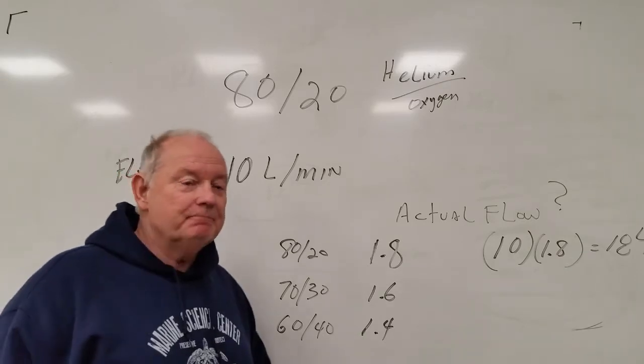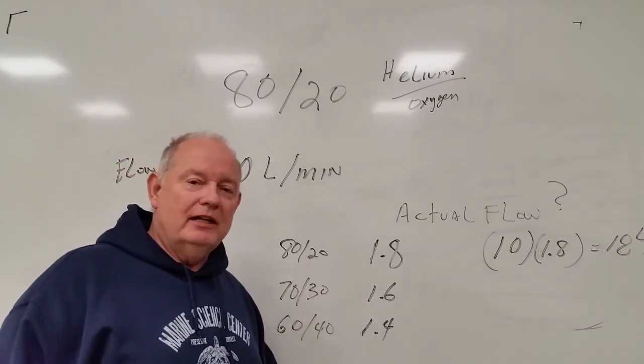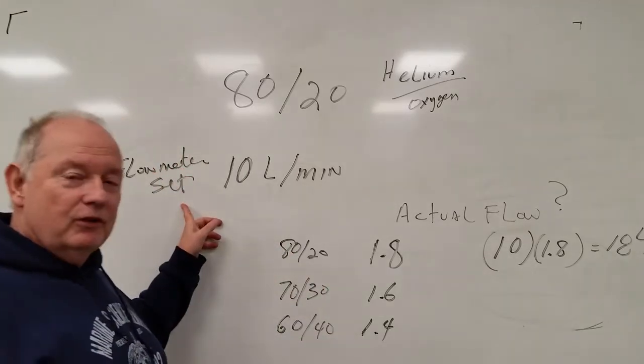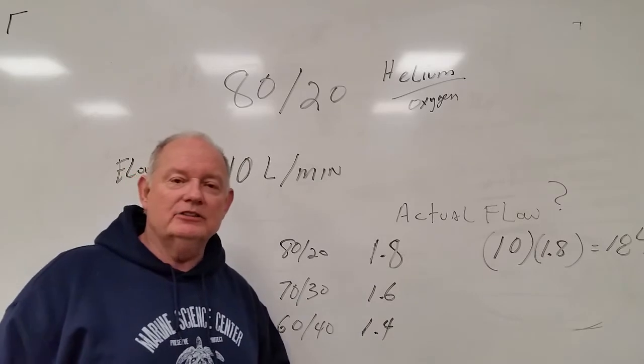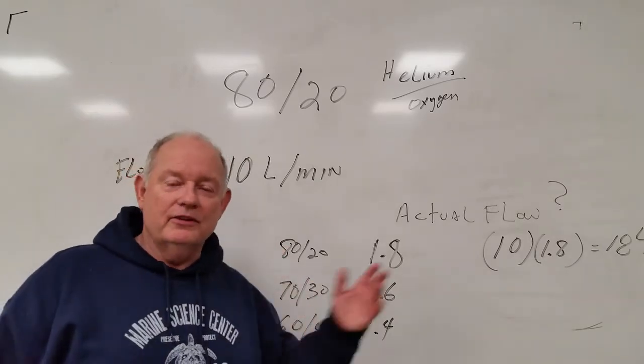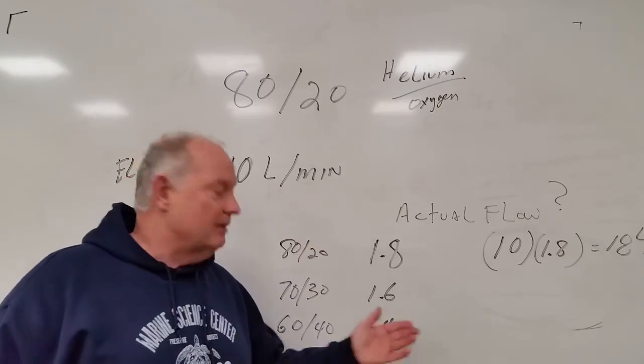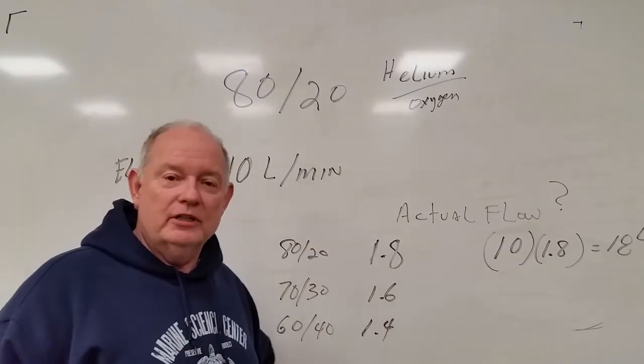For your board test, you must memorize these flow factors: 1.8, 1.6, 1.4. In the past, there was no calculator, so you would use a flow meter set to 10. Since calculators are now allowed, expect perhaps a flow meter to be set on 13 liters per minute times 1.8. You'll have to use your calculator for that.